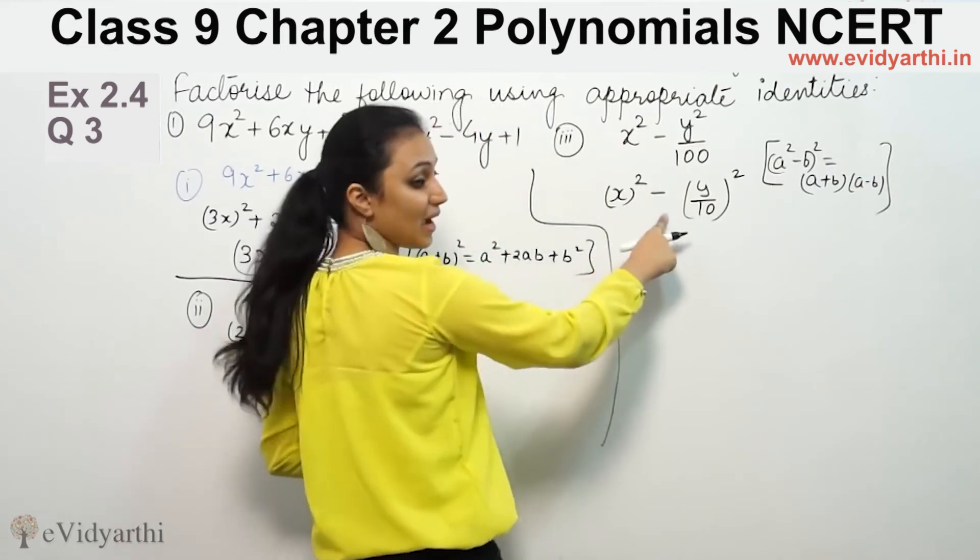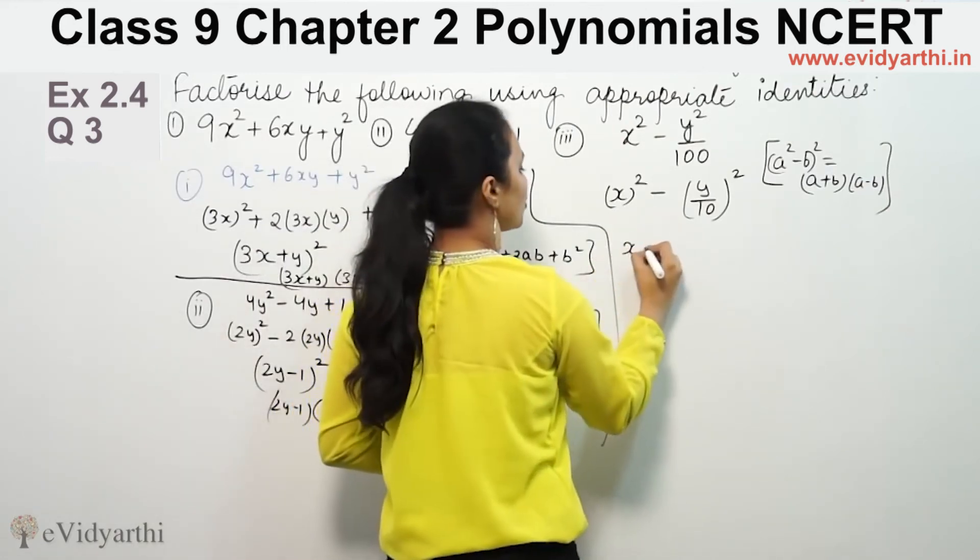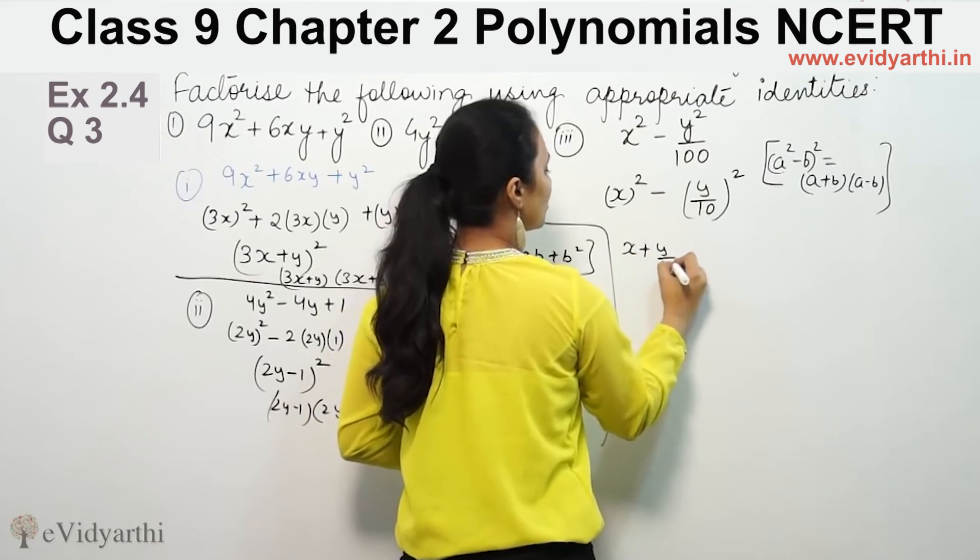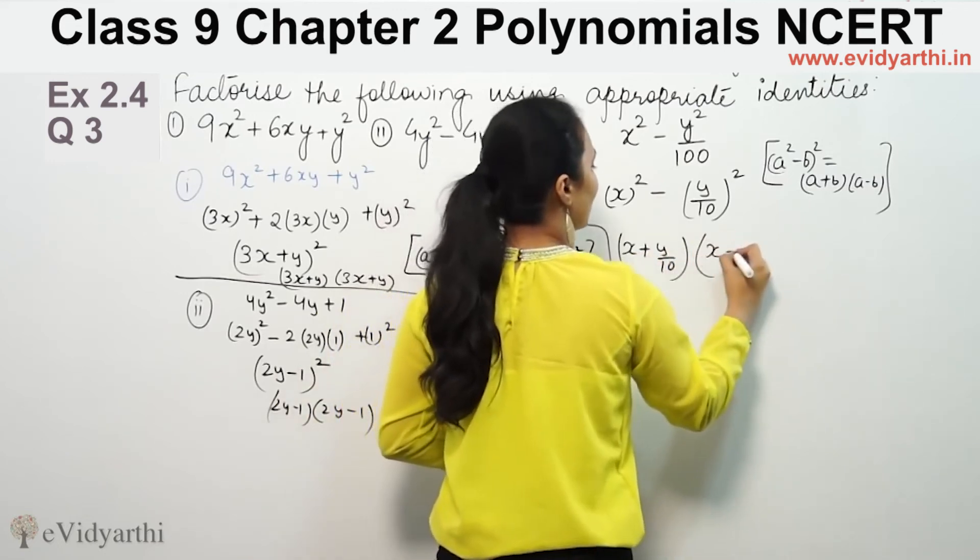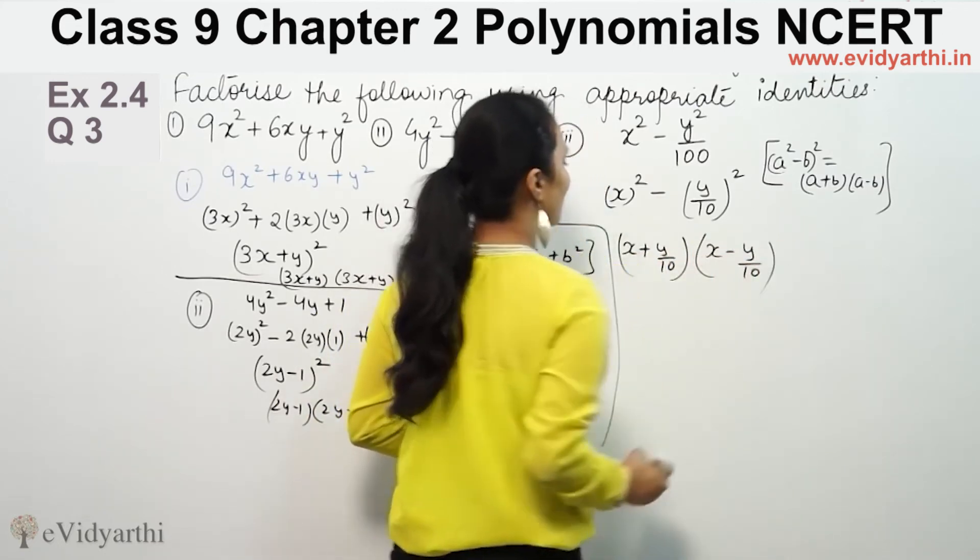which is (a+b)(a-b). So here we have a² - b². We are making a, which is x, plus b, which is y/10, and a minus b. This is the factorization.